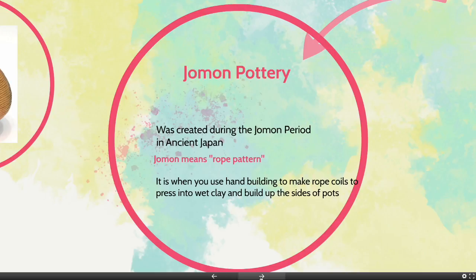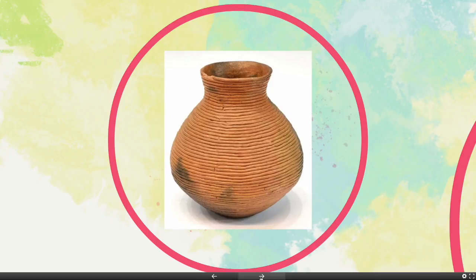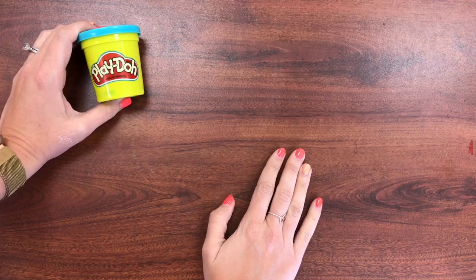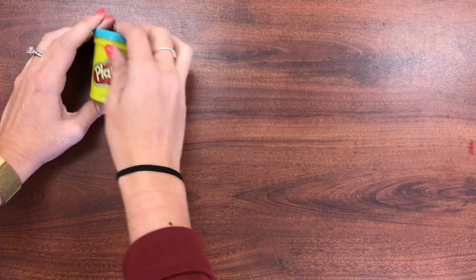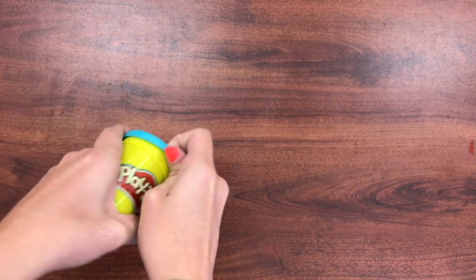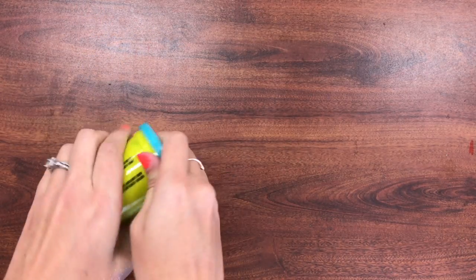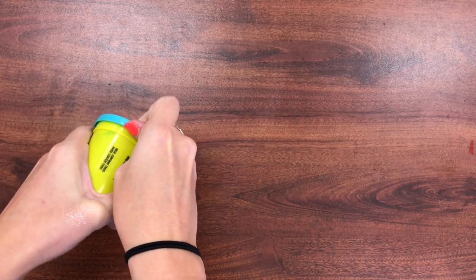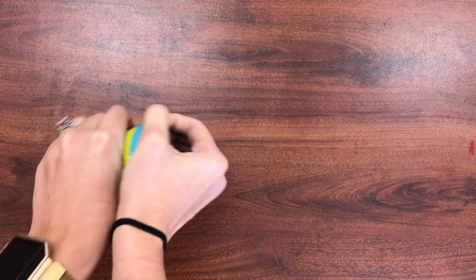An example of a coil pot is what you see right here. Today we are going to be practicing making coils using Play-Doh. And so I'm going to set a few ground rules for using this Play-Doh.